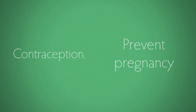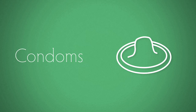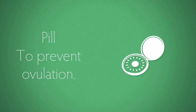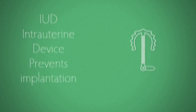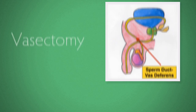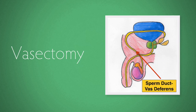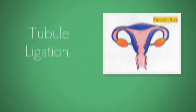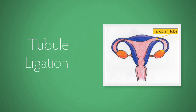The final topic is contraception — how to prevent pregnancy. The first method is to prevent fertilization using a barrier method such as condoms. Chemical means such as the pill prevent ovulation. Implants such as intrauterine devices like the coil prevent implantation from taking place. Surgical means include vasectomy, where the vas deferens are cut in the male, and tubal ligation in the female, where the fallopian tubes are clipped.